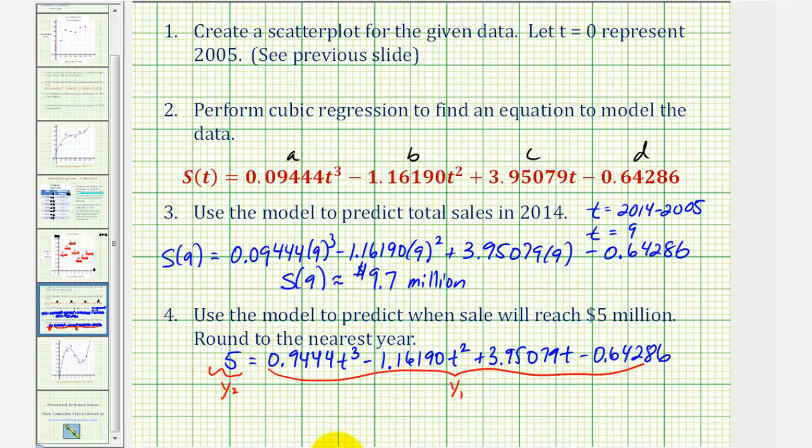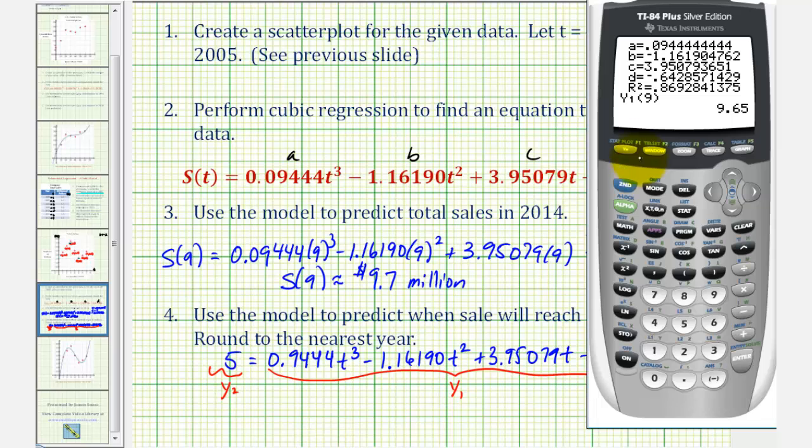So now we'll go back to the graphing calculator, and if we press y equals, we already have the right side of our equation in y one, so now we'll press enter, and enter y two equals five. But remember on the window, the y maximum only went to 4.5, so we do increase this past five. Let's go ahead and change this to, let's say, six, or let's make it seven. So now if we press graph,